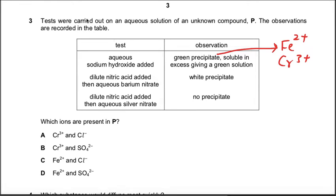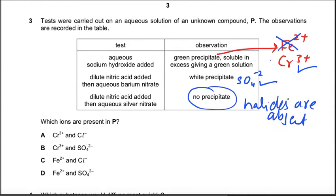But soluble in excess gives a green solution. When you add excess of sodium hydroxide, chromium 3 precipitate dissolves and forms a green solution, so you can eliminate iron 2, you have chromium 3 ion. Next one: dilute nitric acid added, then aqueous barium nitrate, white precipitate forms. You know that when you add barium nitrate into the solution and white precipitate forms, it means in the solution sulfate ion is present. So in the second test you can confirm the sulfate ion. In the third test, dilute nitric acid added and then aqueous silver nitrate, no precipitate. It means halides are absent. So what would be your answer? Chromium sulfate, option B, this is your answer.